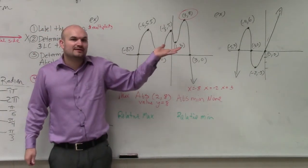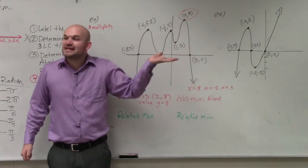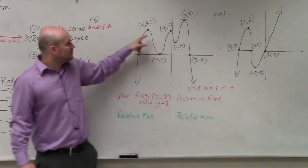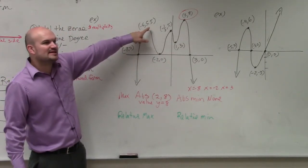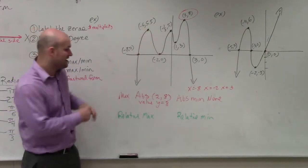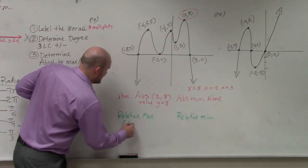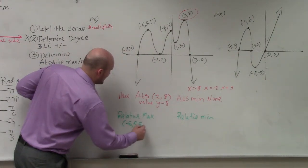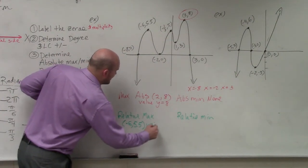So the relative min, you guys can see, is what is basically like the second highest point in this graph? Negative 6, 5.5. So you can say negative 6 at 5.5 or y equals 5.5.